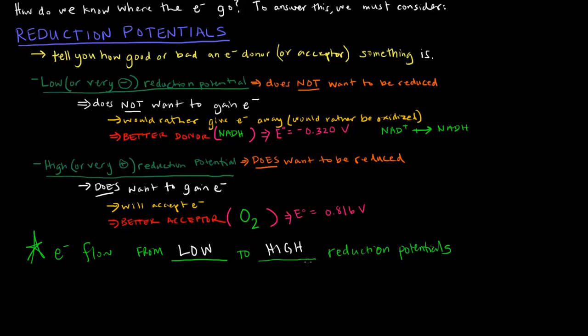It's very important to keep the idea of reduction potentials in mind when thinking about the electron transport chain, because there are a bunch of different things involved in it and they all have different reduction potentials. If presented with the question of which component has a higher or lower reduction potential, knowing at what point it comes in the electron transport chain, you should be able to judge which should have the higher and which should have the lower reduction potential. I'll get to more details about that in the next video.